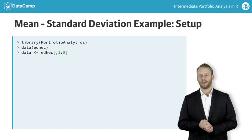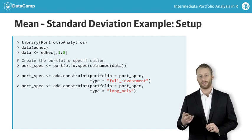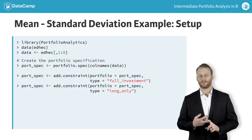The EDHEC dataset contains monthly returns of the EDHEC composite hedge fund style index returns. You can create the portfolio specification object by initializing it with the column names of the dataset as the asset names. Now you add two constraints to the portfolio specification: full investment and long only constraints.